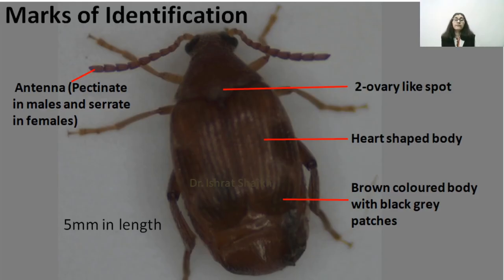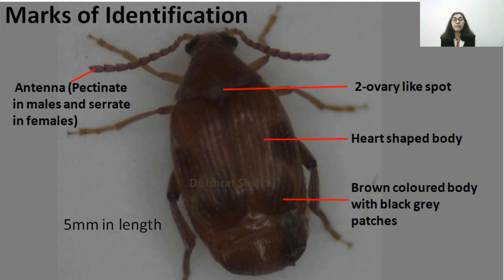This is the adult pulse beetle where you can see the different parts — two ivory-like spots, heart-shaped body, and brown-colored body with grayish-black patches. The adult measures roughly 5 mm in length. The antenna is pectinate in males and serrate in females. This specimen shows a serrate antenna, therefore it is a female.